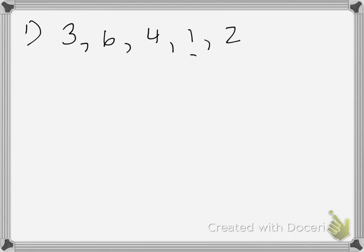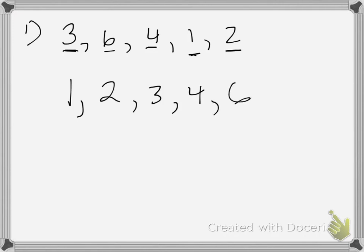The lowest number is 1, then 2, then 3, then 4, and finally 6. Now I've written these numbers in order, and in this case it's simple to see that the middle number is 3. So the median is 3.